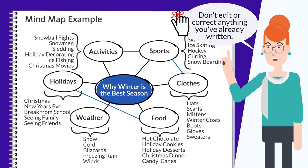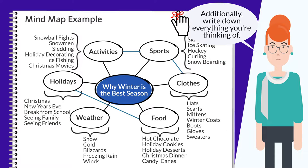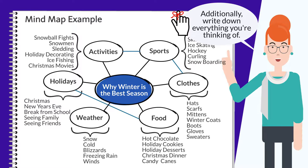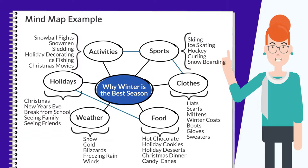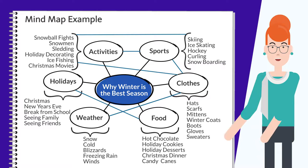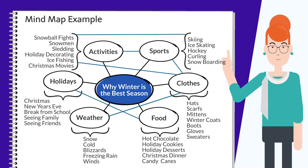We repeat this process and add subtopics and details to every idea, continuing to connect similar topics with lines. Remember, don't edit or correct anything you've already written. Additionally, write down everything you're thinking of, even if it appears to not fit in with the other ideas. There's plenty of time to edit later. It's also okay to connect multiple ideas together outside of the main topic. Multiple connections are great because they show how ideas relate to each other.